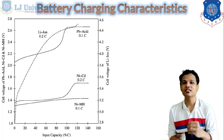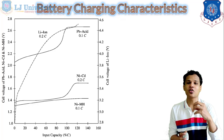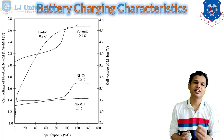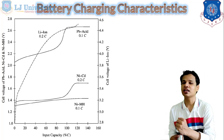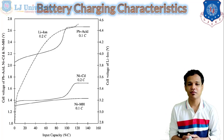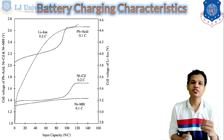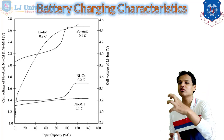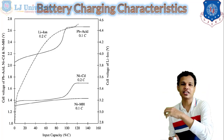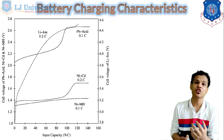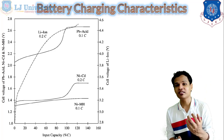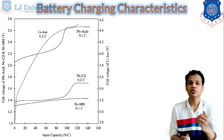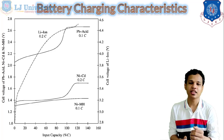In this graph, you can see the charging characteristics of the four batteries that we discussed in the previous lecture as well — that is lead acid, lithium-ion, nickel cadmium, and nickel metal hydride battery. In the case of the charging graph, the x-axis shows voltage versus input capacity of the battery. The capacity here is given in percentage, from 0 to 100%.